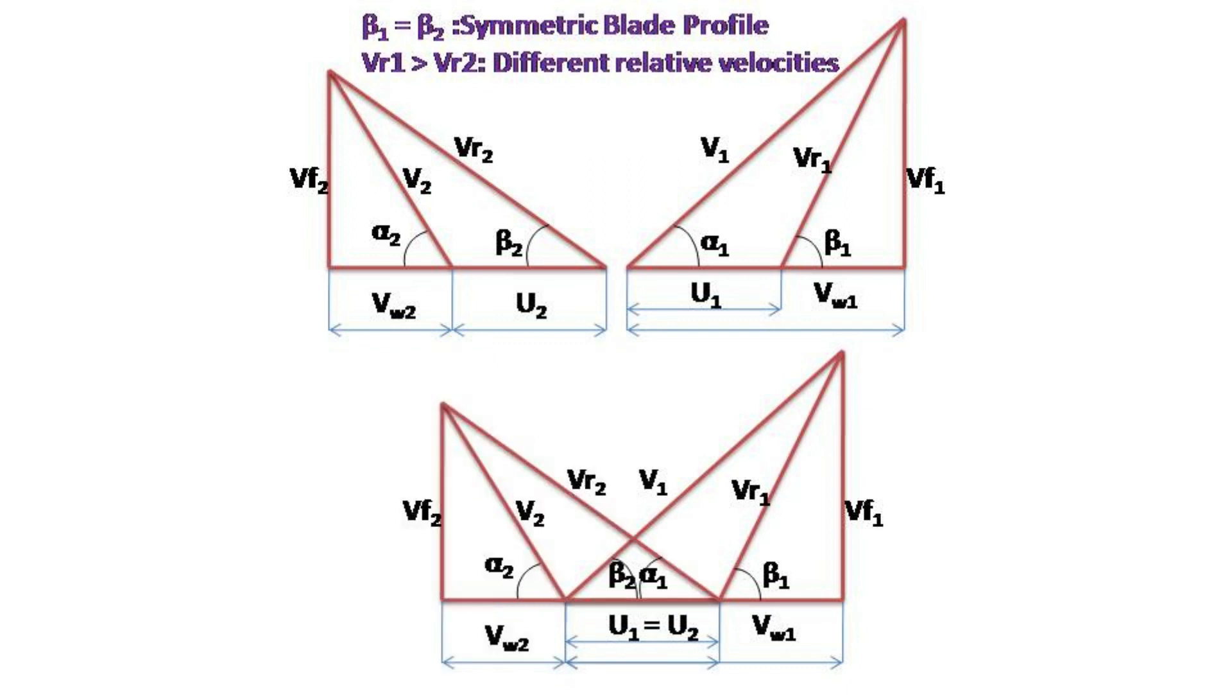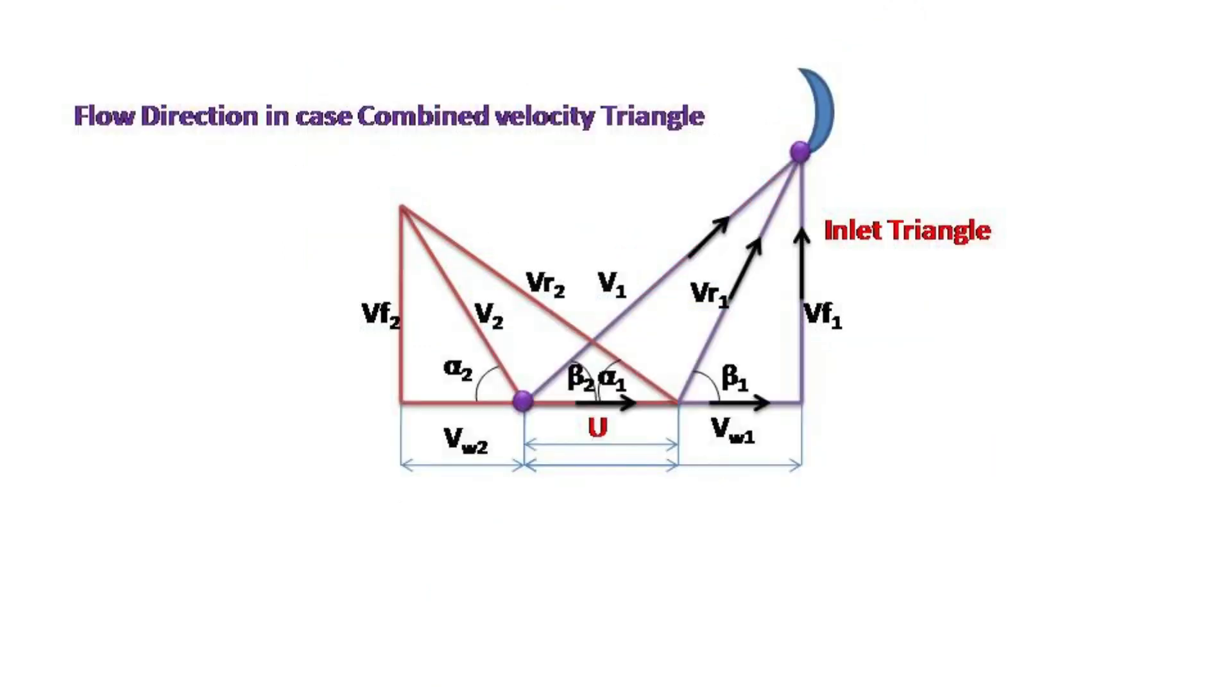Method of drawing both the triangles on a common base line u is same as that of drawing individual triangles. Flow directions for the combined velocity triangles are as shown in the figure step by step. I hope you can understand this.